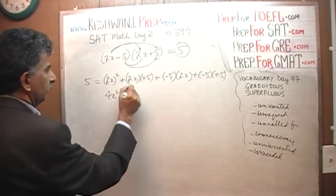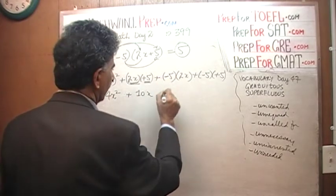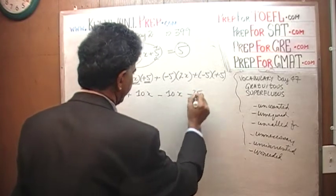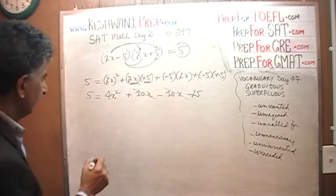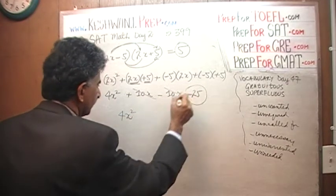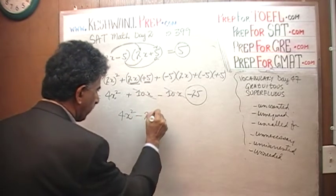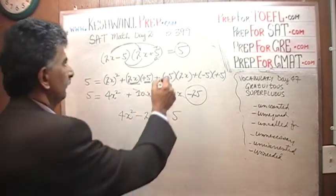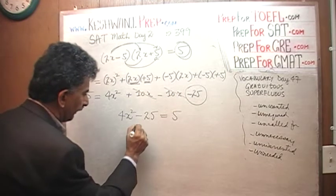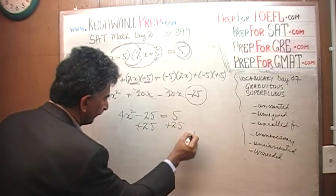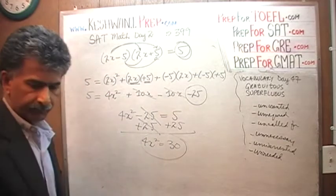So here we get 4x squared. 2x times 5 gives us 10x. Negative 5 times 2x is going to give us negative 10x. And here we are going to have negative 25. A positive 10x and a negative 10x is going to cancel out. And what we are left with is 4x squared minus 25 equals 5. And the question simply asking us what is the value of 4x squared. 4x squared is right there. Let's add 25 to both sides. And this 25 cancels out. And we are left with 4x squared equals 30. And that is all there is.